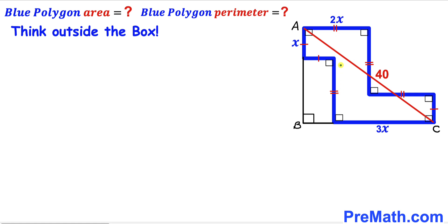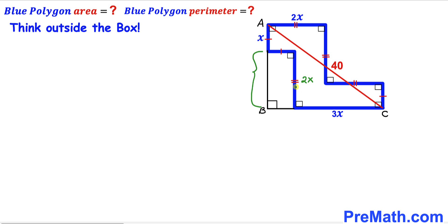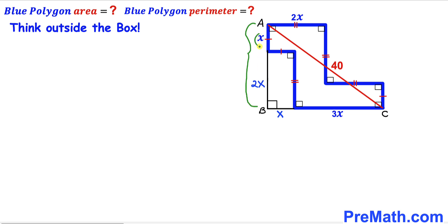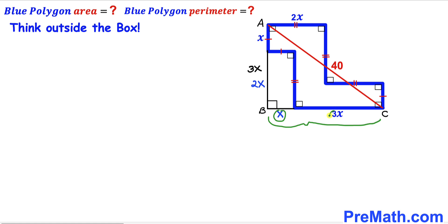Now let's make an observation. We know that this side is 2x, so this segment is 2x as well. Likewise, this segment equals this segment, so this segment is x. Therefore this whole side AB is x plus 2x, which gives us 3x. And likewise this whole side BC is x plus 3x, which gives us 4x.